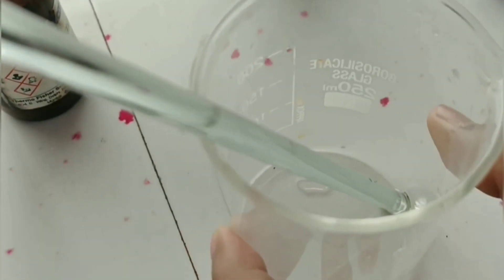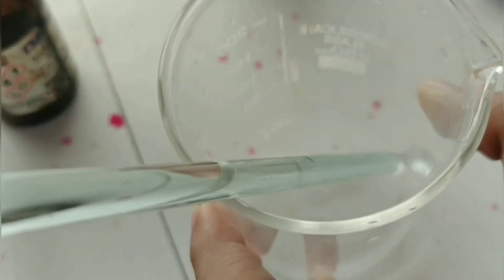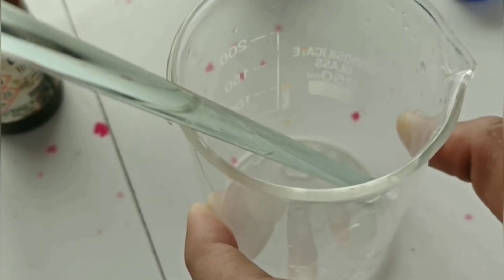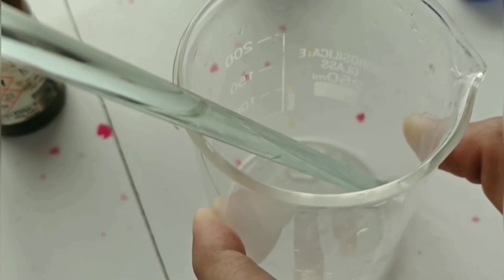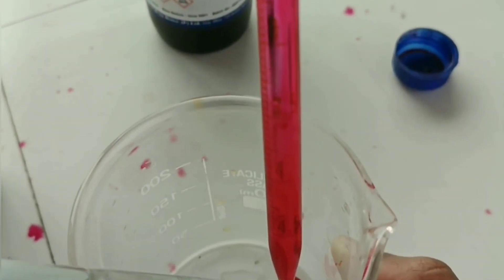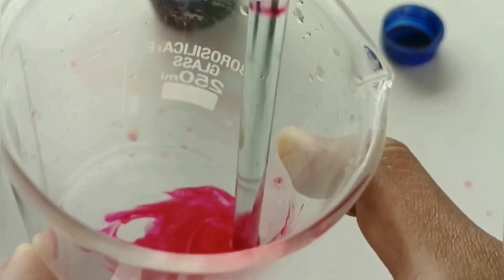Now mix it properly with the help of glass rod to form a solution of phenol glycerin. And add 0.1 ml of amaranth solution in it. Now mix it properly.